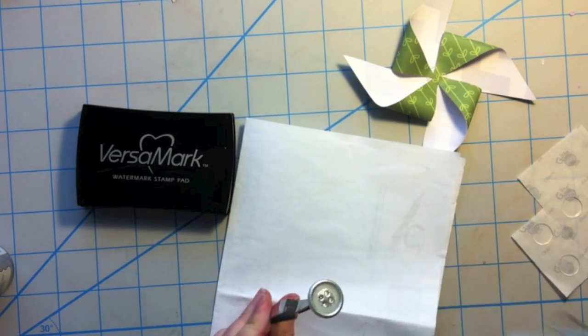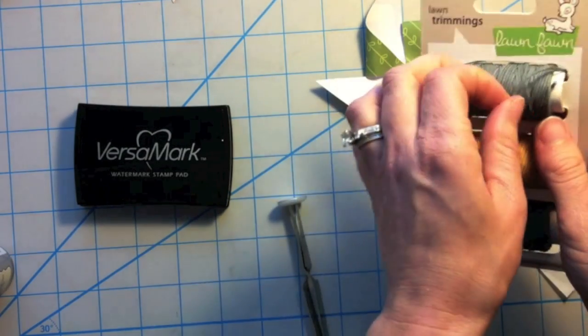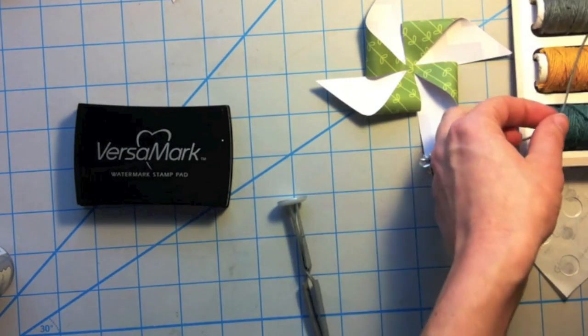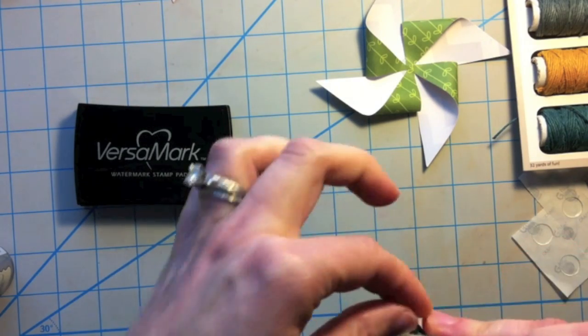It's going to go great with that chevron background from the paper. And then I'm going to heat set it and you get this nice, bright, shiny button. You can do glitter or whatever you want. And then I'm going to take some of the new hemp twine that Lawn Fawn is carrying and I'm just going to feed it through the button.